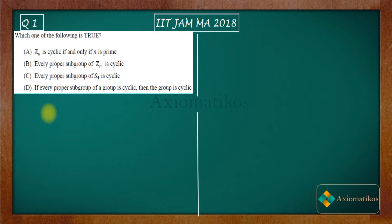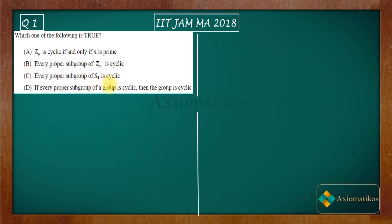Let us first have a look at the options. Which one of the following is true? Option A says Zn is cyclic if and only if n is prime. Option B says every proper subgroup of Zn is cyclic.